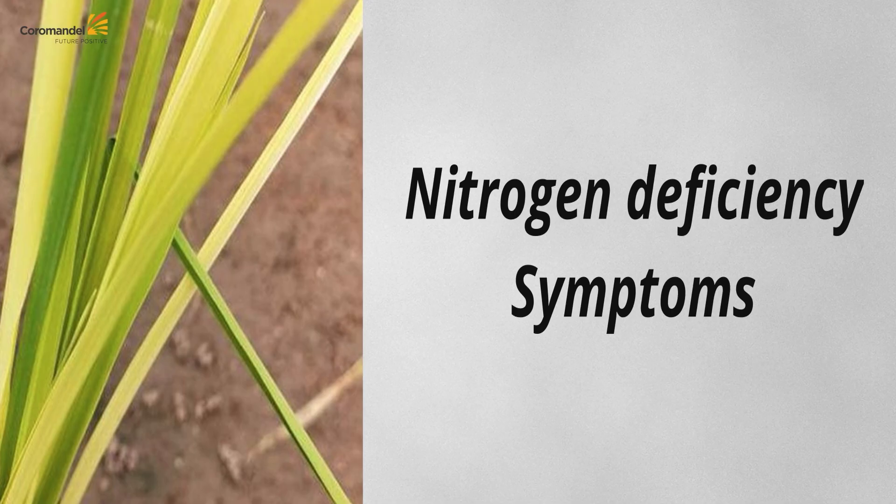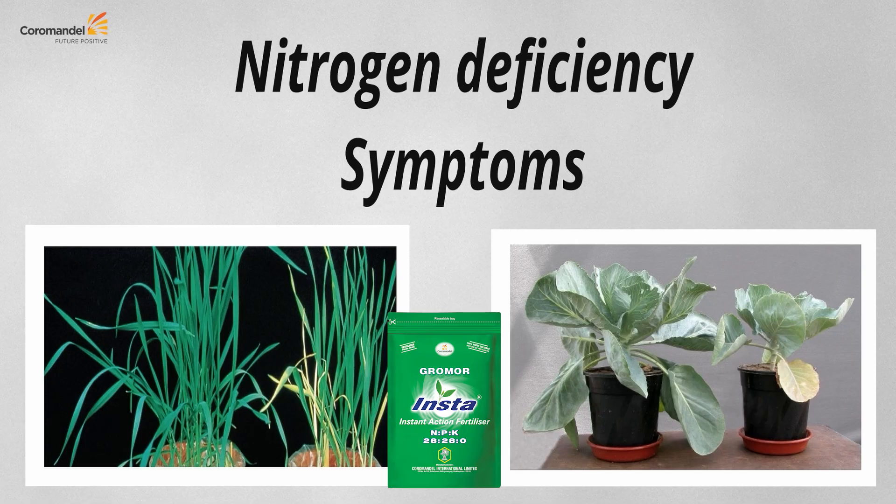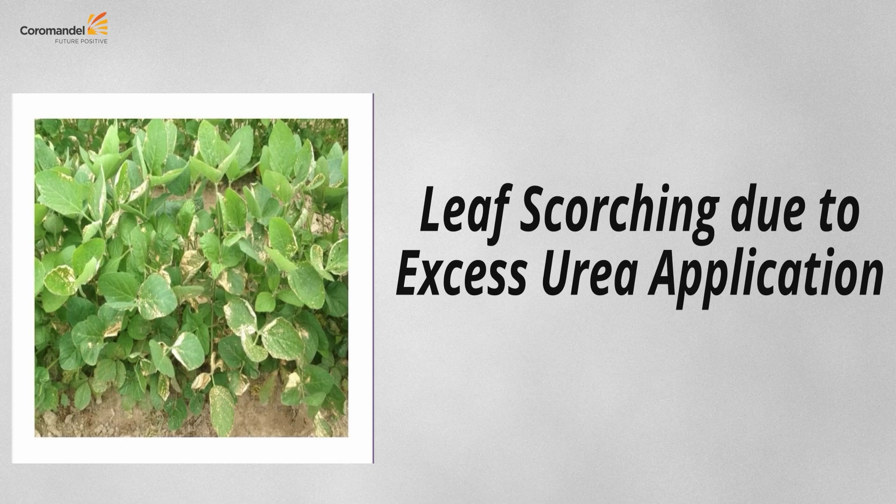For nitrogen deficiency, yellowing of the lower leaves appears, plants become stunted, and maturity is delayed, resulting in poor protein content and reduced nitrogen availability. Some deficiency symptoms are shown for cereal crops and cabbage. Nitrogen is a very essential nutrient, but excess application of urea can cause burning or scorching of the leaf tips — shown here as urea toxicity.